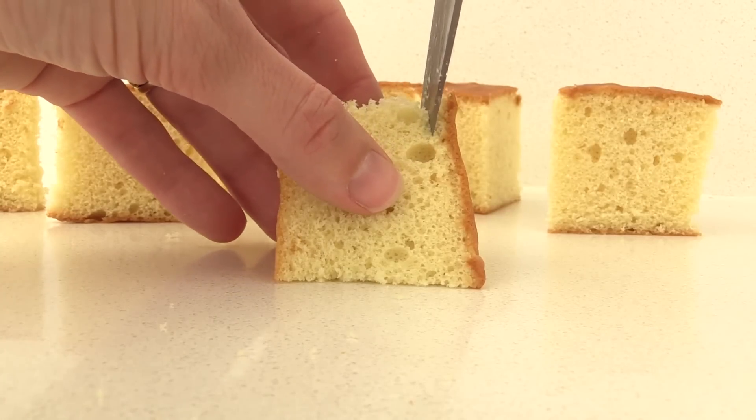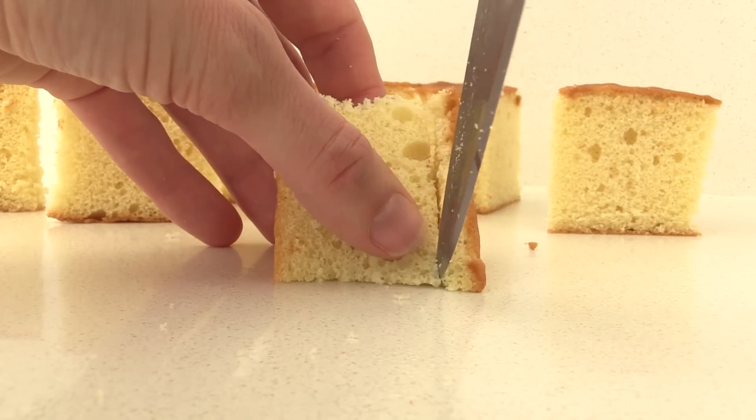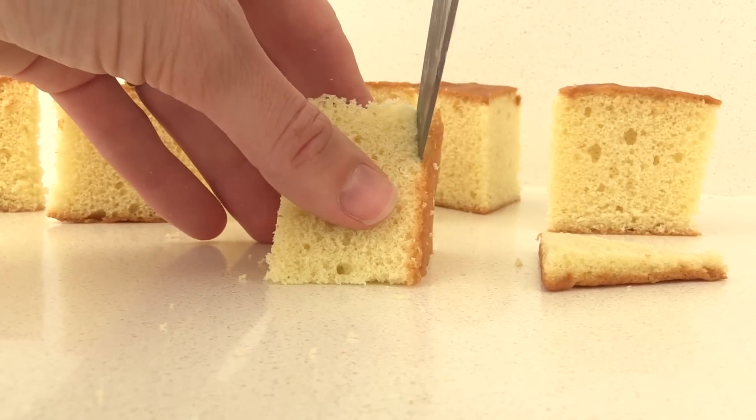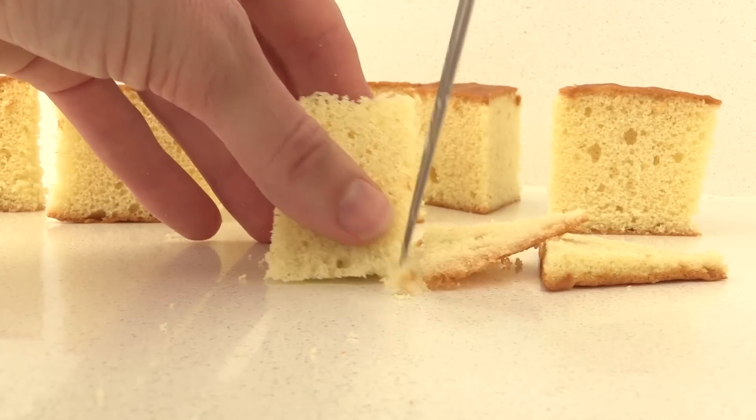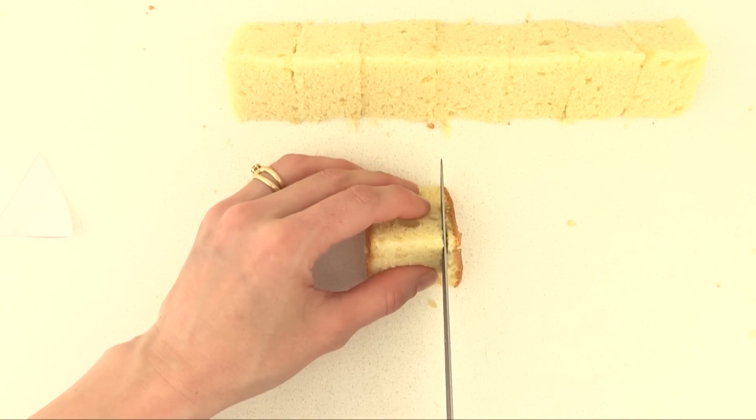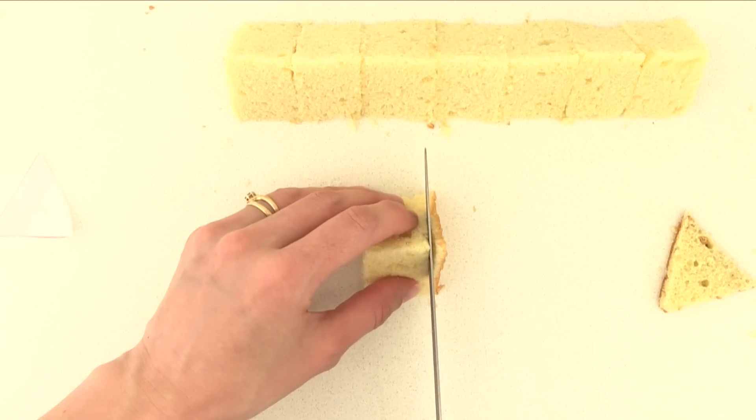Once you have cut them you need to trim them to make sure that they are straight on the top and the bottom and we also want to take off that darker coloured cake. I am making more triangles than I need here, putting the cake all the way to the top so I don't have to guess exactly where the mousse is going to come up to.